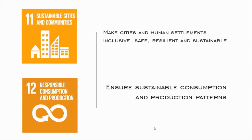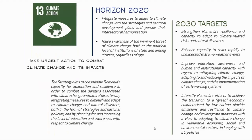The Strategy Goal Sustainable Cities and Communities aims to make cities and human settlements inclusive, safe, resilient and sustainable. The Strategy Goal Responsible Consumption and Production aims to ensure sustainable consumption and production patterns. The Strategy Goal Climate Action aims to take urgent action to combat climate change and its impact, consolidating Romania's capacity for adaptation and resilience, integrating measures to diminish and adapt to climate change and natural disasters, and increasing the level of education and awareness with respect to climate change.